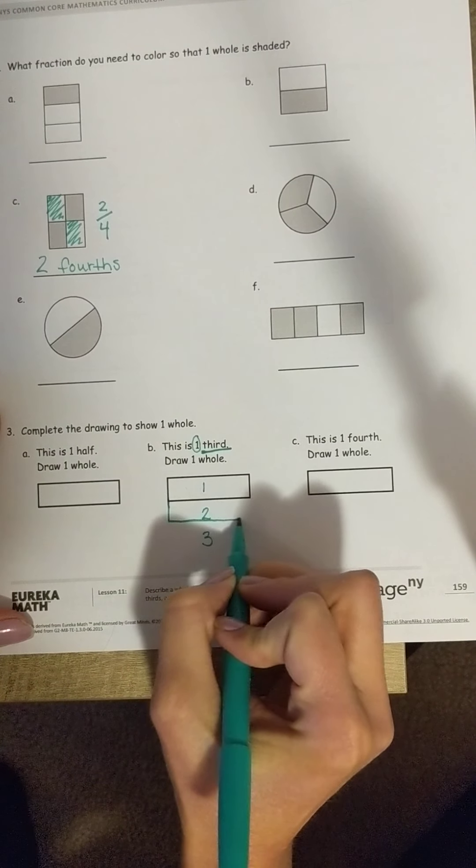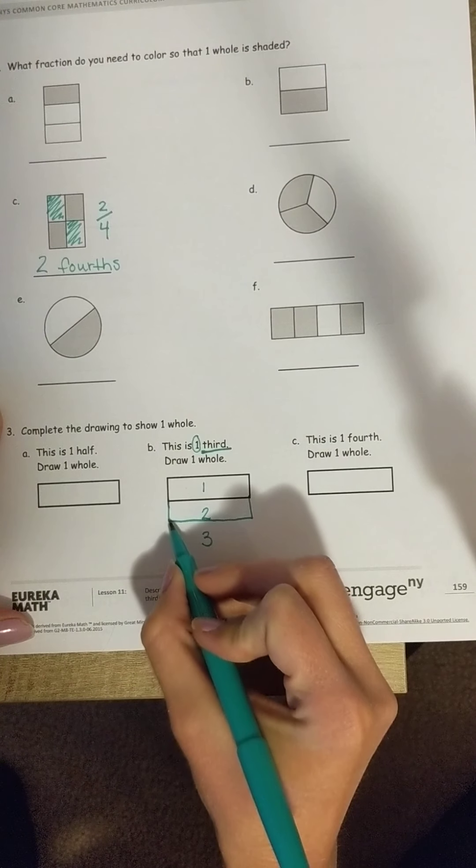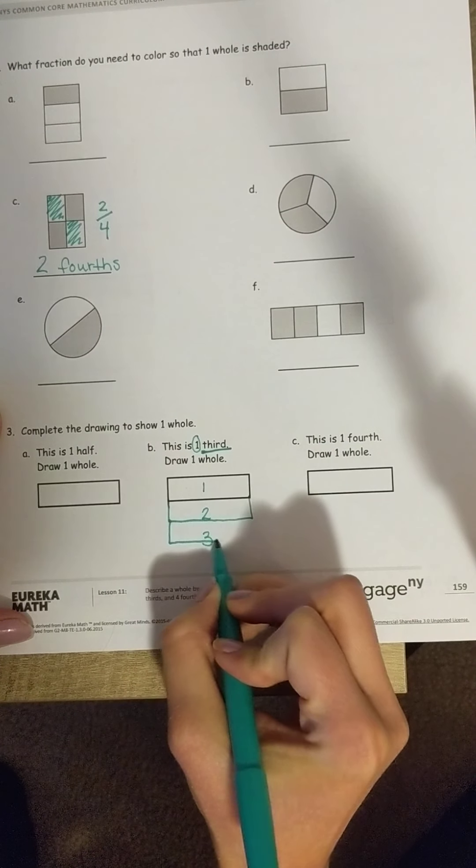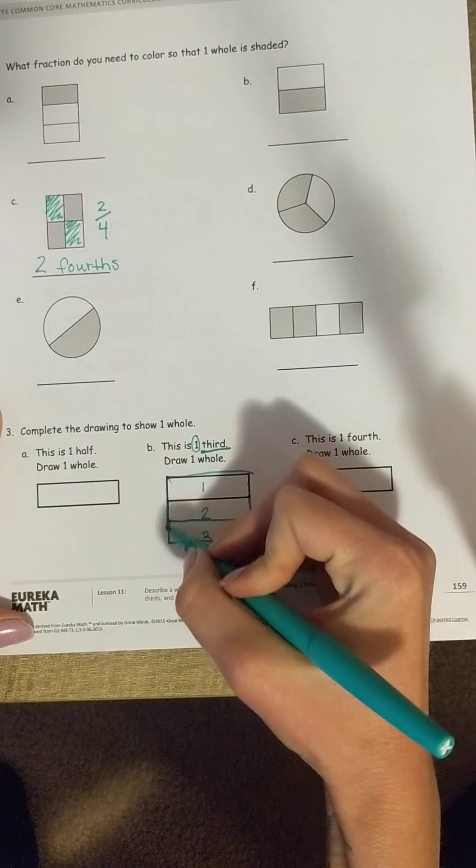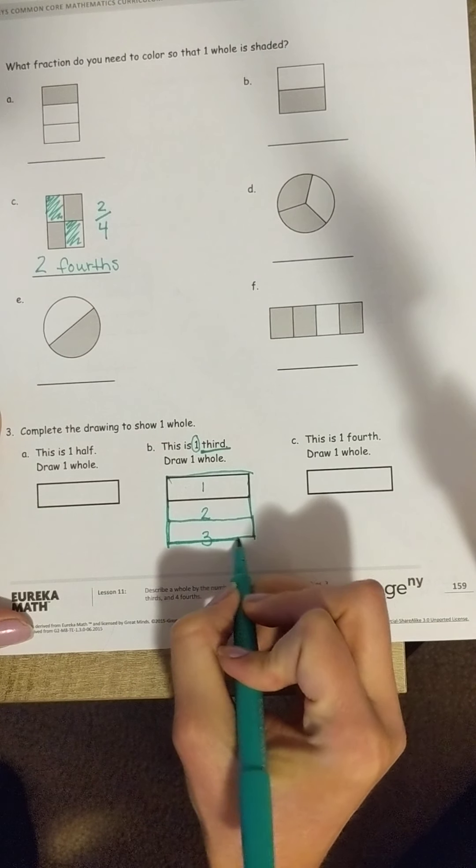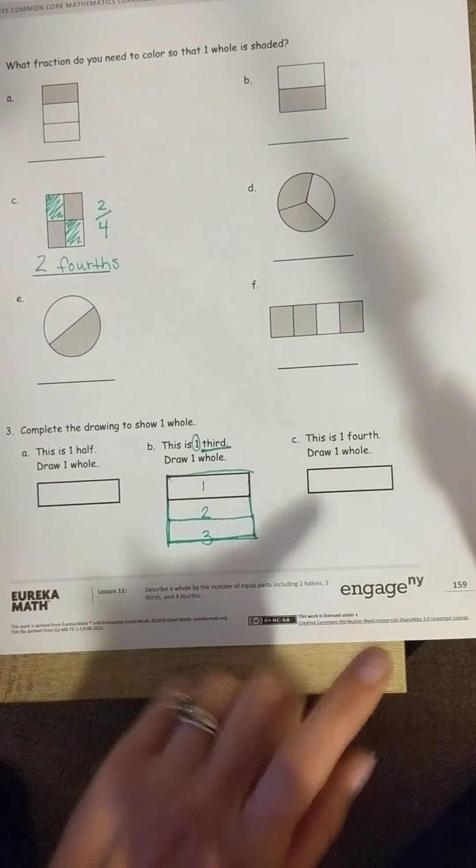So, that would be one, two, because they need to be equal, I'm trying my best to make them equal, three. So, the whole shape would have to look like that.